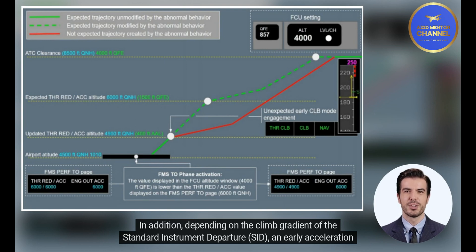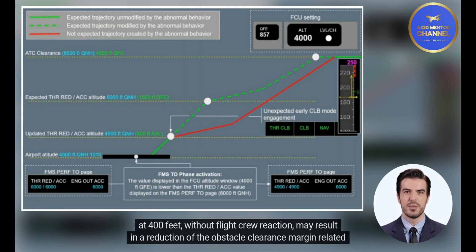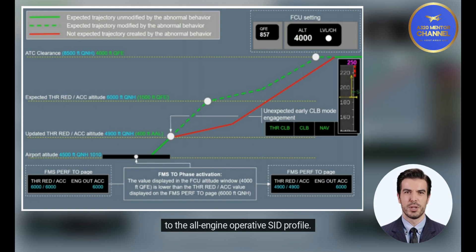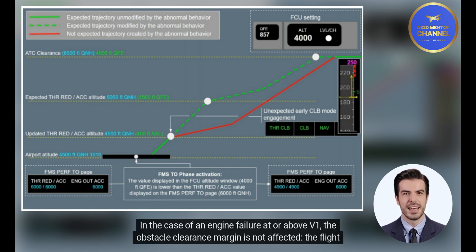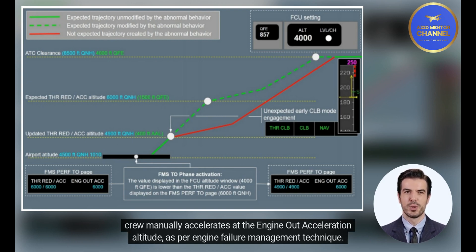In addition, depending on the climb gradient of the standard instrument departure, SID, an early acceleration at 400 feet without flight crew reaction may result in a reduction of the obstacle clearance margin related to the all-engine operative SID profile. Note: In the case of an engine failure at or above V1, the obstacle clearance margin is not affected. The flight crew manually accelerates at the engine out acceleration altitude, as per engine failure management technique.